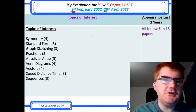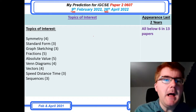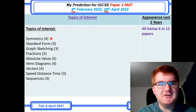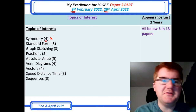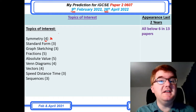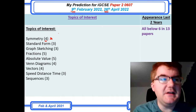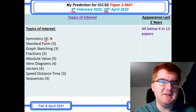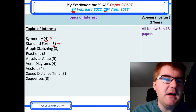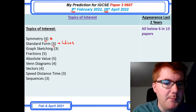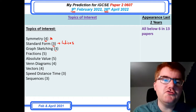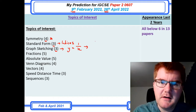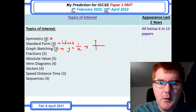We're going to start with what's called the topics of interest — these are the least often topics. Taking symmetry as an example, either lines of symmetry or rotational symmetry have still appeared four times out of 13 papers. I've taken the last 13 papers — 2021 and 2020 — to give you the best predictions possible. Standard form appears only three times but is often combined with indices. Graph sketching has come up too; they might ask you to sketch y equals 1 over x without a calculator.